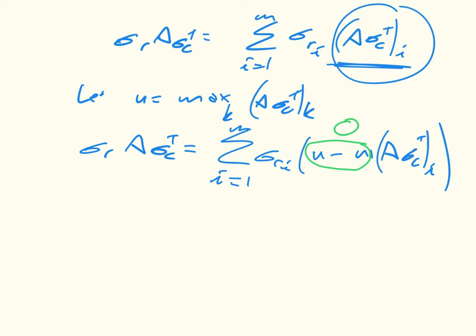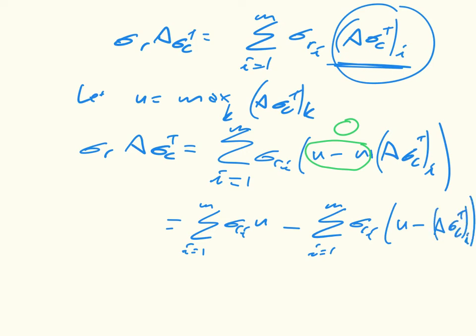Once I've done that, I can expand things out a little bit. That's just going to be equal to the sum from i equals 1 to m of sigma R i U, minus the sum from i equals 1 to n of sigma R i times U minus A sigma C to the T i. So that minus sign has disappeared in there.